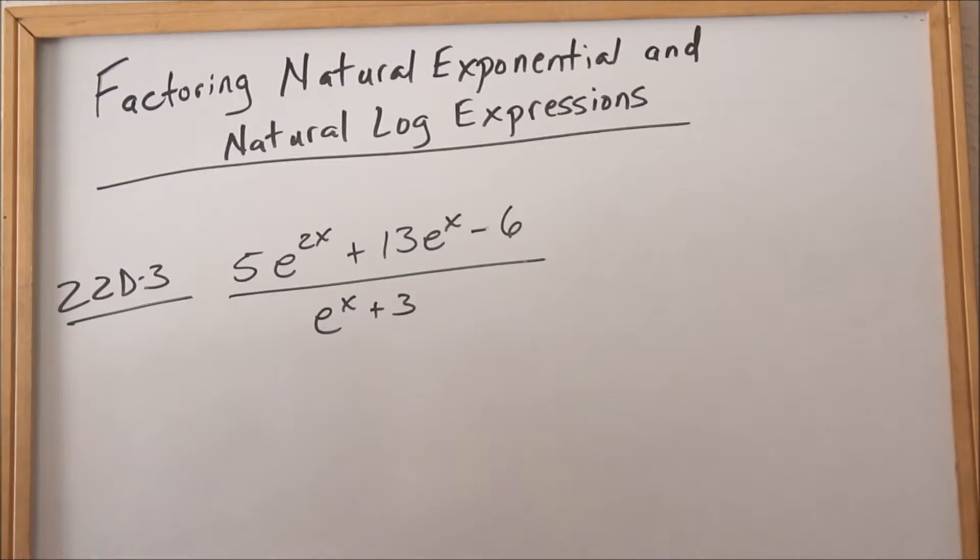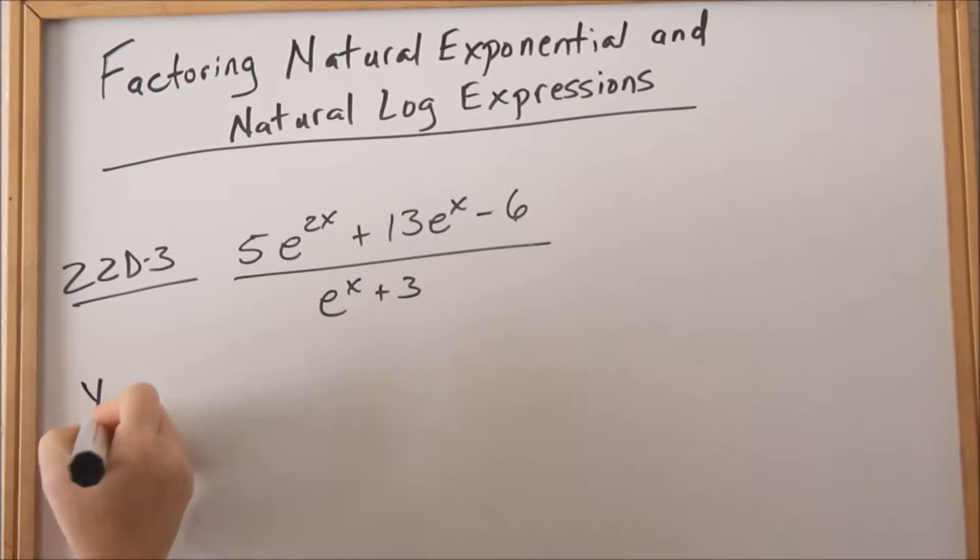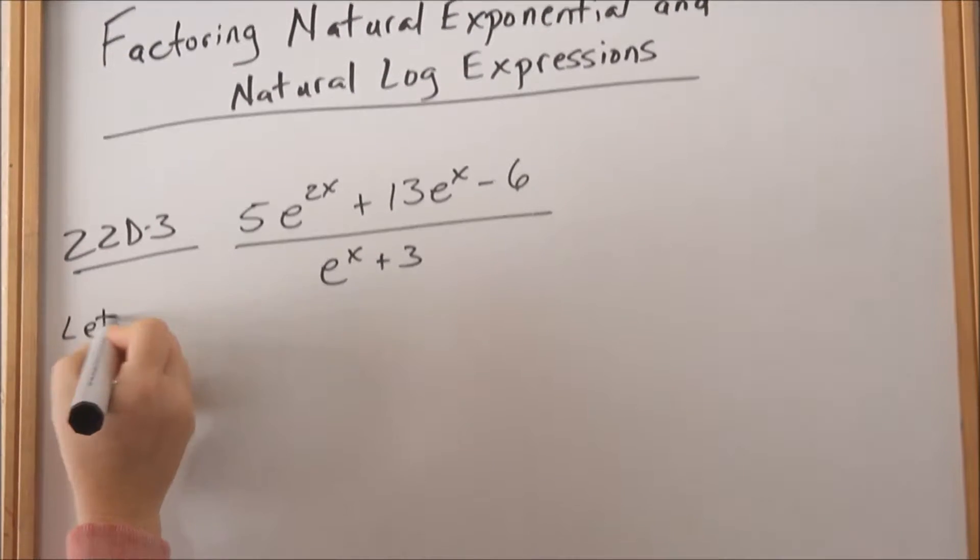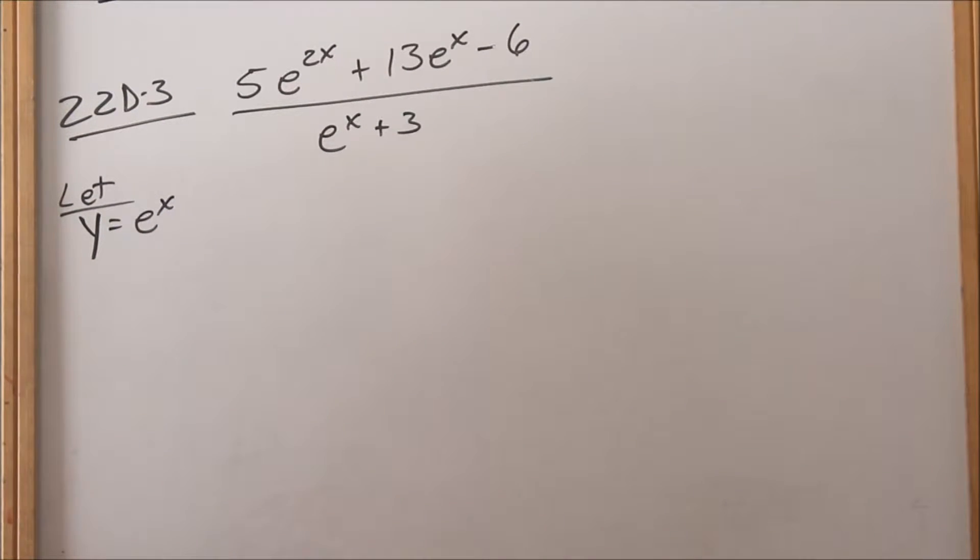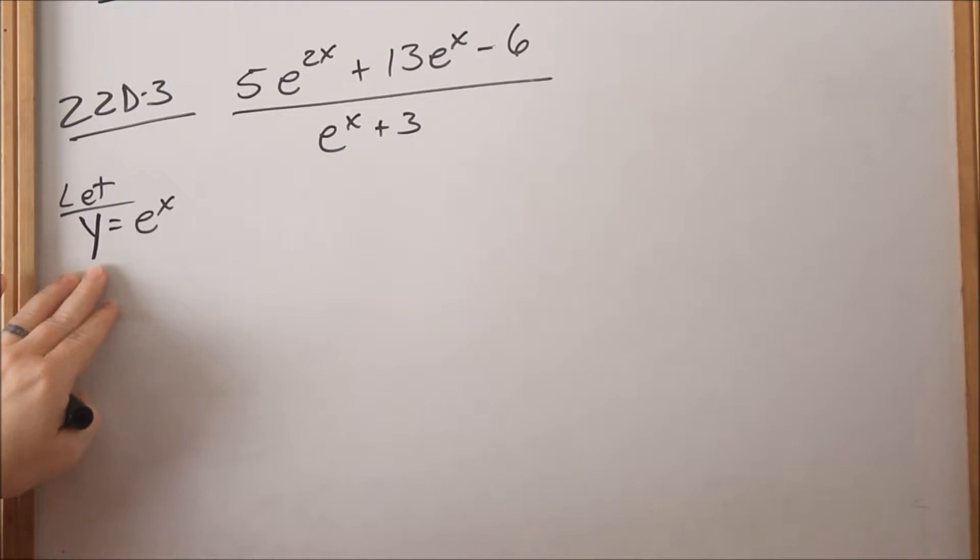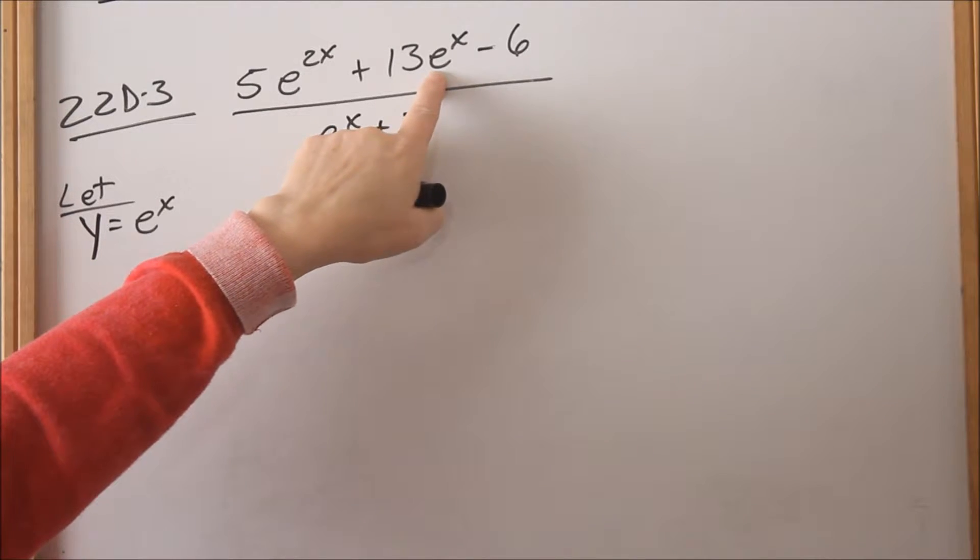We're going to make a substitution. Let y = e^x. Everywhere we see e^x, we're going to put in the letter y. You can pick any letter you want; the book just happens to use y. So everywhere we see e^x, we're going to put in a y.